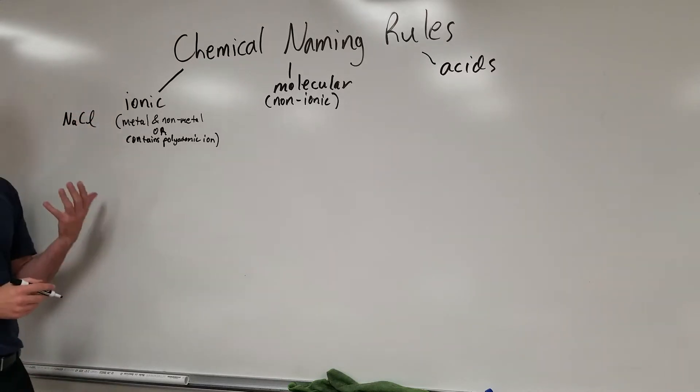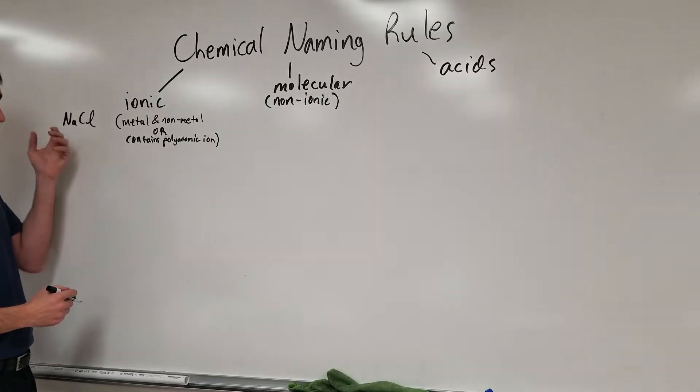A metal and a non-metal, like for example sodium chloride. If we look at sodium on the periodic table, it's a metal. Chlorine is a non-metal. Honestly, if there's metal in the chemical formula, you can bet it's probably an ionic compound.